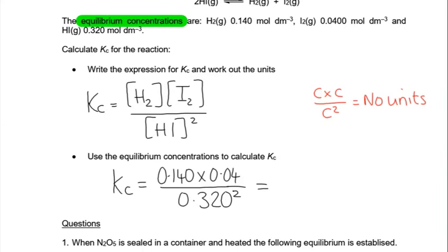So you put that in your calculator. And if you do that, you should get 0.0. Now my calculator is reading 5, 4, 6, 8, 7, 5. But if I look at the numbers up here, that one's 3SF. That one's 3SF. That one's 3SF. So I'm going to go for three significant figures.